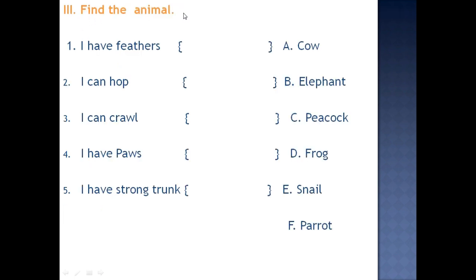So next session is find the animal. So we have some clues here and here some animal's names. So you have to match which animal will do these things. So here I have feathers. I can hop. I can crawl. I have paws. I have strong trunk. So I have feathers. So which animal will have feathers? Cow. Cow will have feathers? No. Elephant? No. Peacock? Yes. Peacock will have feathers.